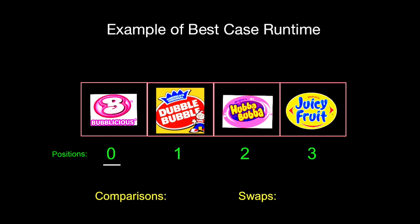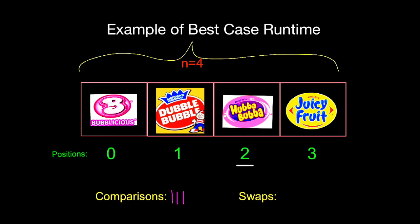We're going to Bubble Sort these bubblegum names in alphabetical order, counting the number of comparisons and swaps. We start at position 0 — the value there is Bubblicious — and compare it with position 1, Double Bubble. B comes before D, so we don't swap. We move to position 1 and compare Double Bubble with position 2, Hubba Bubba. D comes before H, so we don't swap. Then we compare Hubba Bubba at position 2 with Juicy Fruit at position 3. H comes before J, so we don't swap. We made 3 comparisons; with n equals 4, that's n minus 1 comparisons. We made no swaps, so we don't need to iterate again — consistent with our O of n best case result.